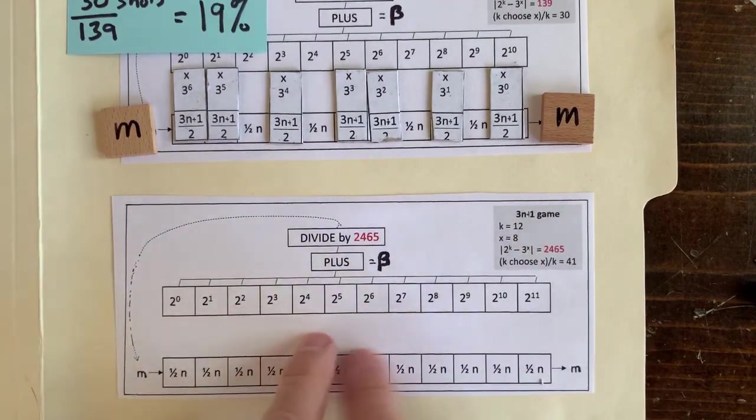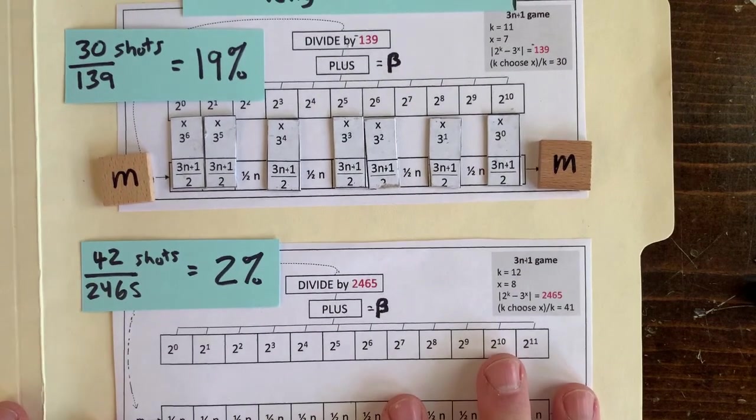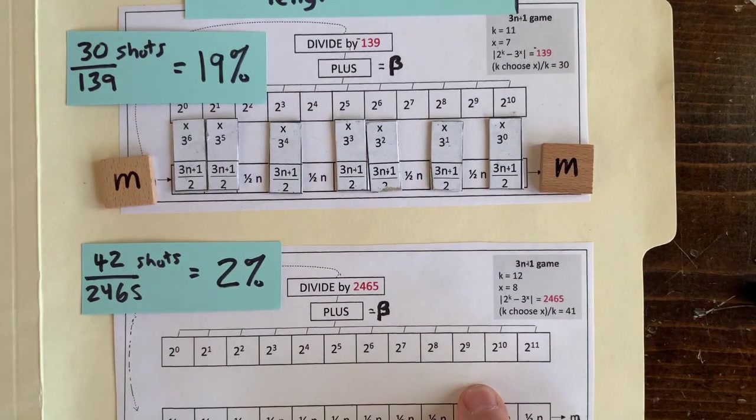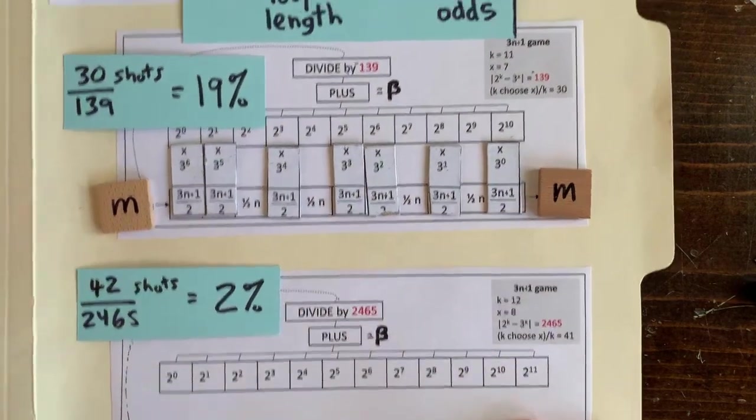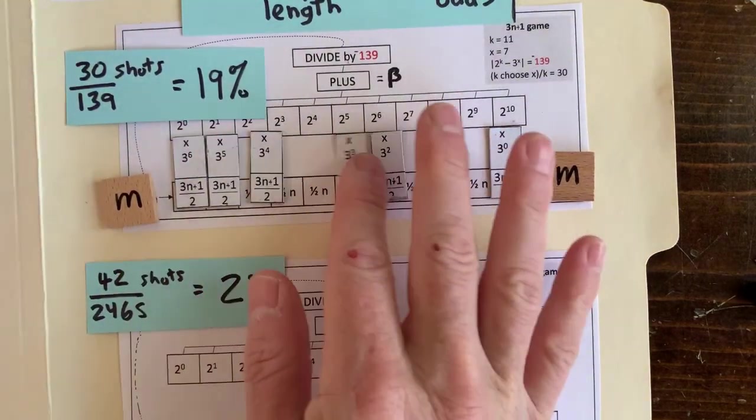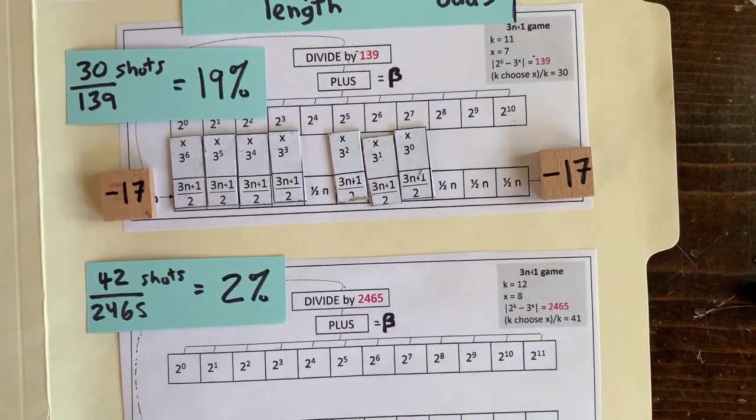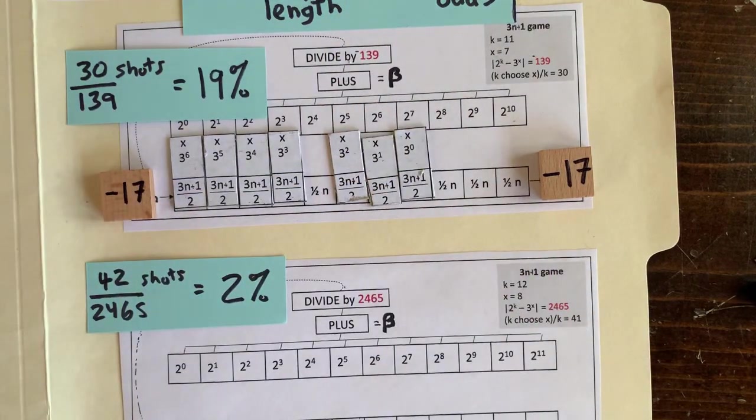Now how about this k equals 12 computer with 8 pieces? There are 42 ways to arrange those pieces, and 2 to the k minus 3 to the x is 2000 something. So now there's only a 2 percent chance of finding an integer loop of length 12. That means if we're going to fool around with operation sequences, it'd be better to play with the k equals 11 computer where we have a 19 percent chance of success. And in fact, if we set the pieces just like this, we get beta equals 2363, which is divisible by 139, and m equals negative 17. So we found another 3n plus 1 loop. This one starts at negative 17, so negative 17 doesn't go to 1. Of course, it's yet another negative loop. But that's okay, because now we have the key to our search.